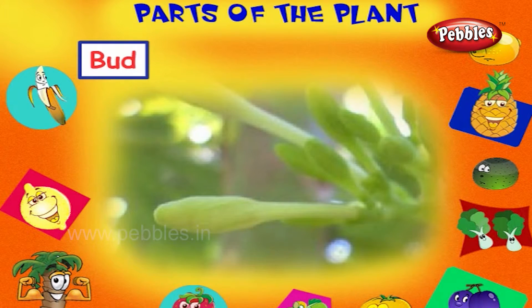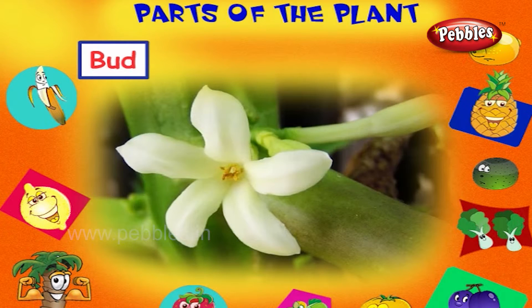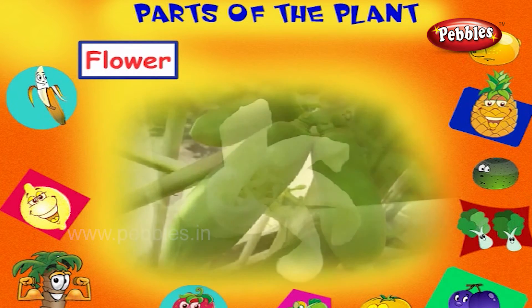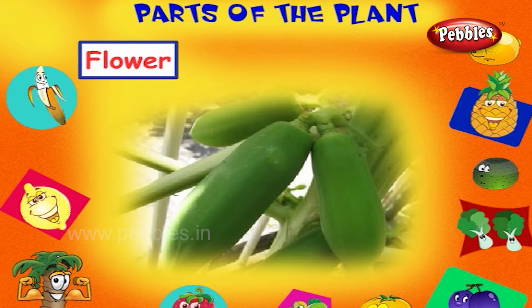This is a bud. It grows to a flower. This is a flower. It grows to a fruit.